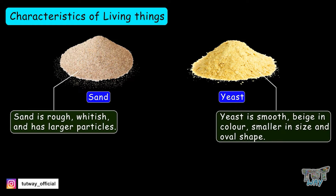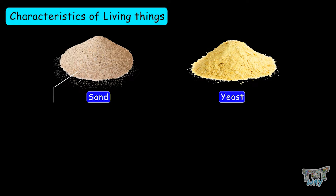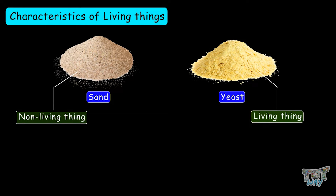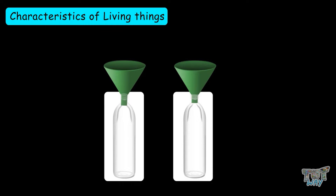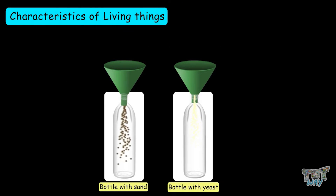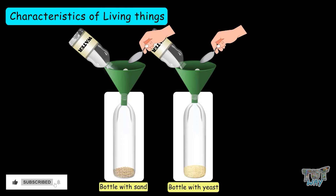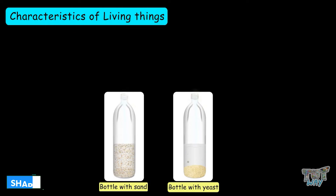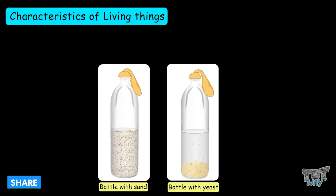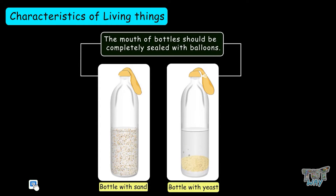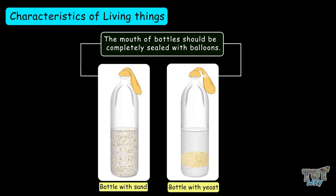Whereas, yeast is smooth, beige in color, smaller in size, and ovular. Sand is non-living, and yeast is a living thing. Now, take two clear bottles. Add some sand to one and yeast to the other. Now add water and a little sugar. Take two balloons and cover the mouths of the bottles with them — the mouths of the bottles should be completely sealed by the balloon.